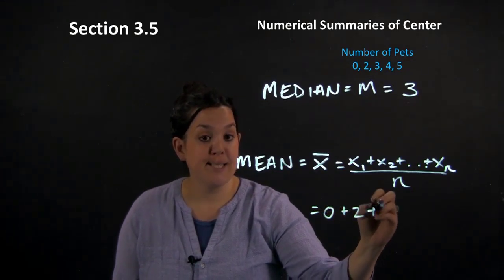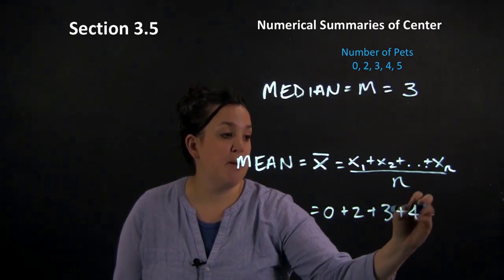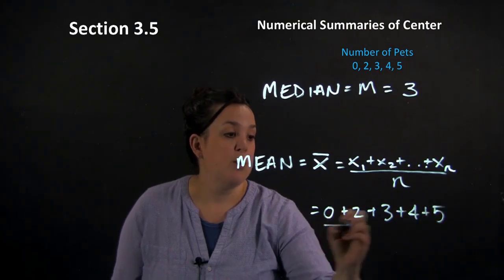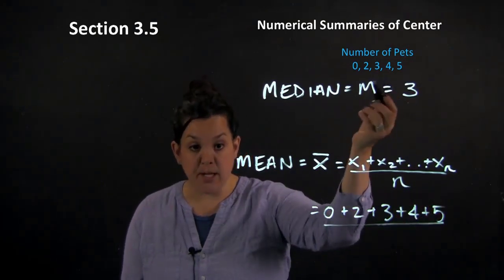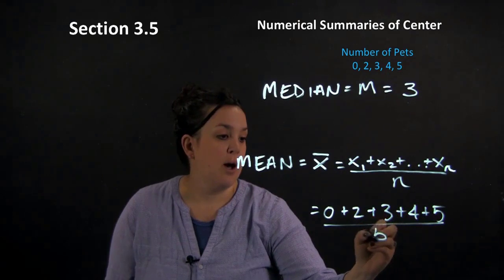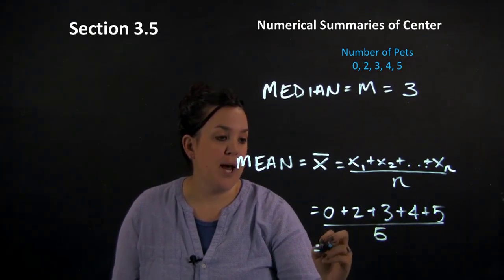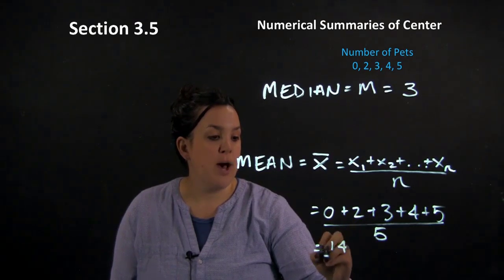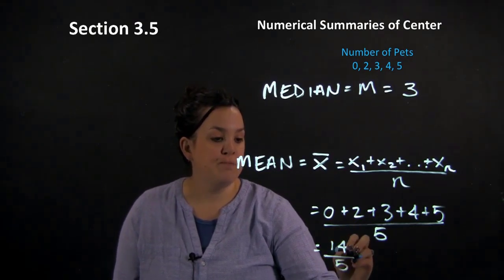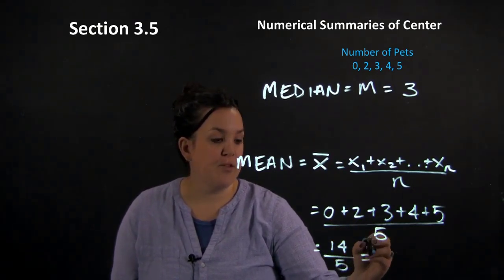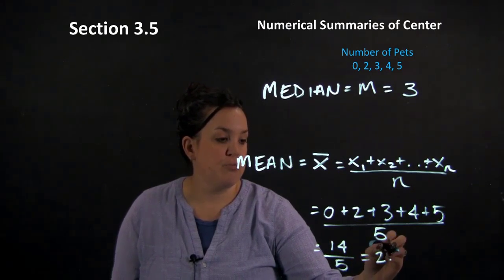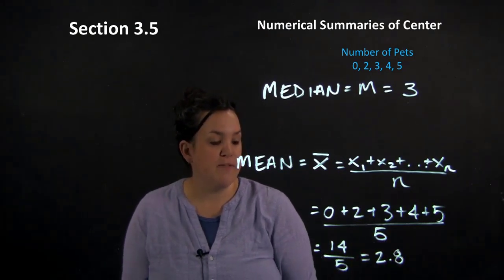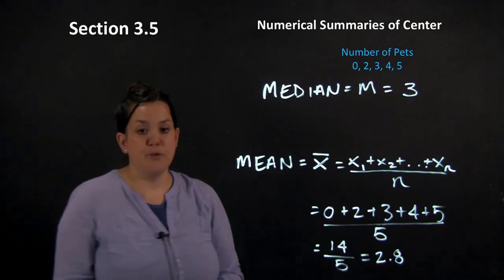Now the mean does not have to have the data set be put into order. So I don't have to have the data in order, it's not like the median where the data has to be ordered. So summing all of those values, we have a numerator of 14. So our mean then is going to be 2.8. So 14 divided by 5 gives us a mean of 2.8.